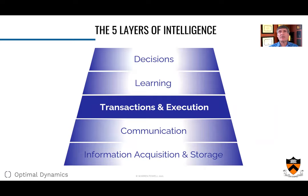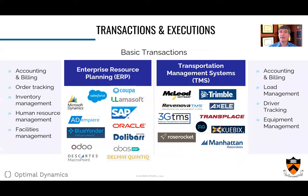Now we get to the level of transactions and execution. This is the point where we actually start running a company — ERP systems and transportation management systems — where we're doing accounting and billing, order tracking, inventory management, and driver tracking. This is where computers are doing very executional, transactional calculations — very important — but these systems all have to be supported by humans in the background actually making the real decisions.